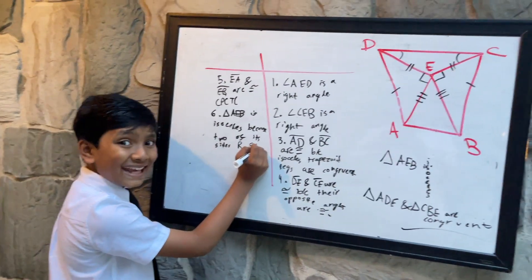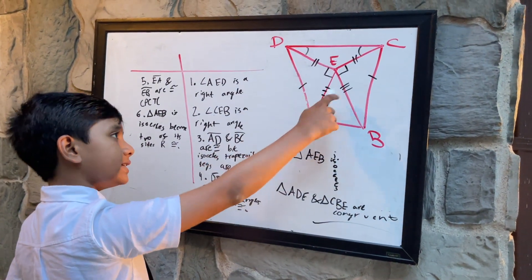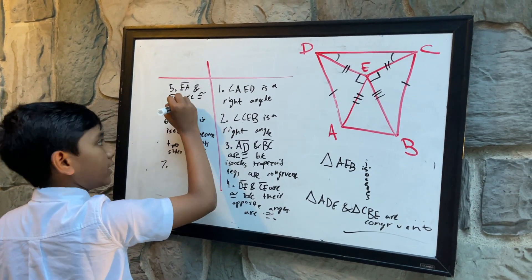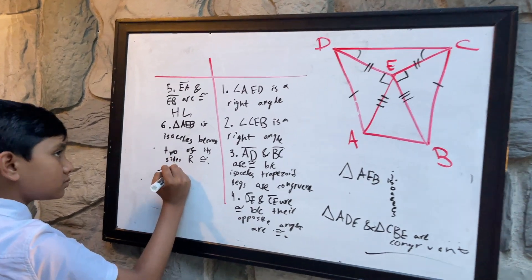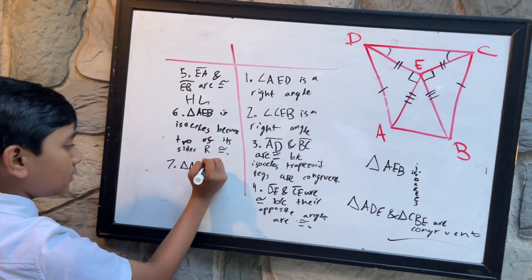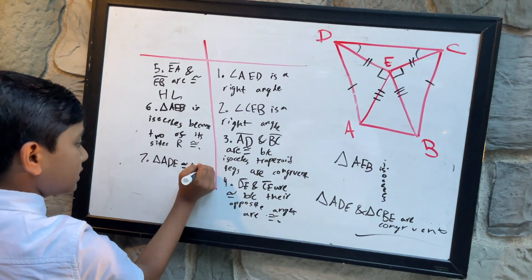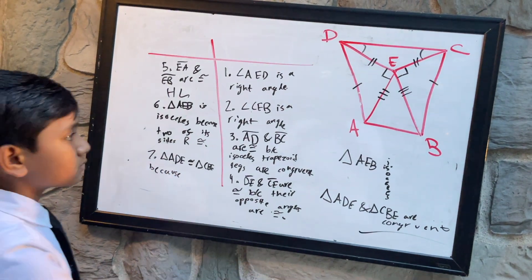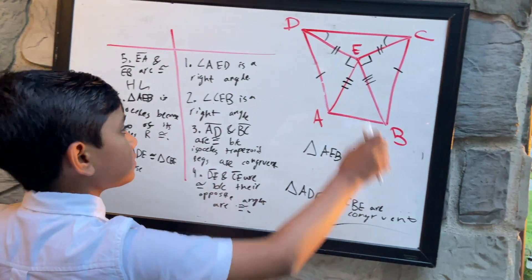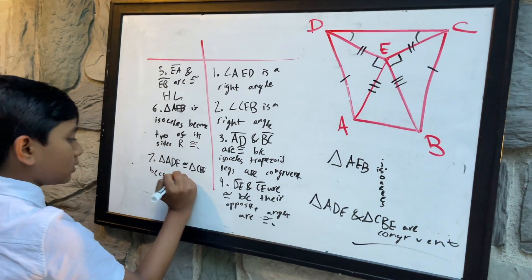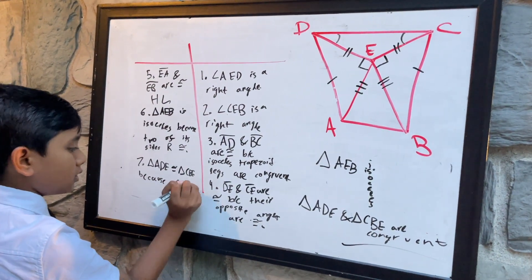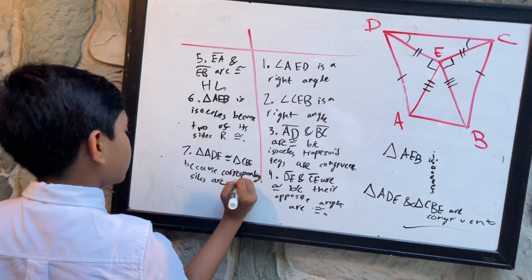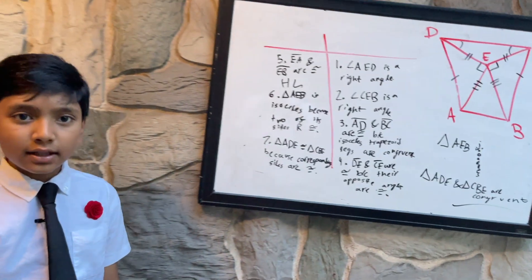And finally, ADE and CBE are congruent. This is actually HL. ADE is congruent to CBE because their corresponding sides are equivalent. That's our solution to the problem.